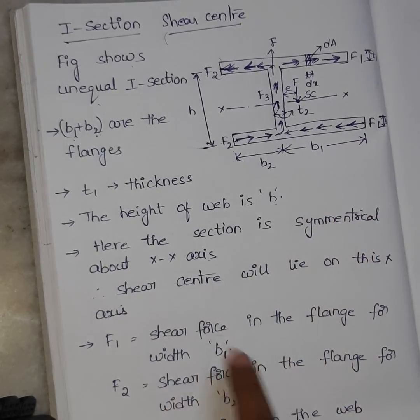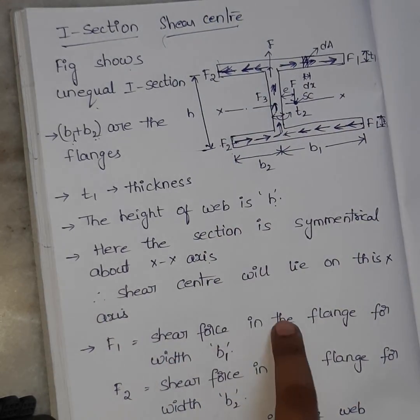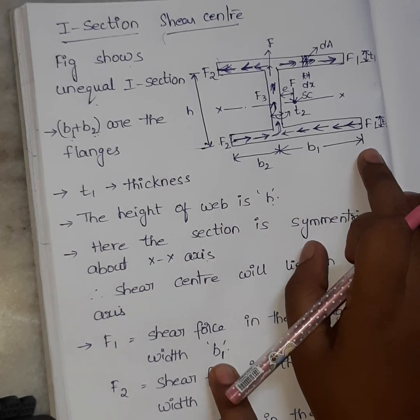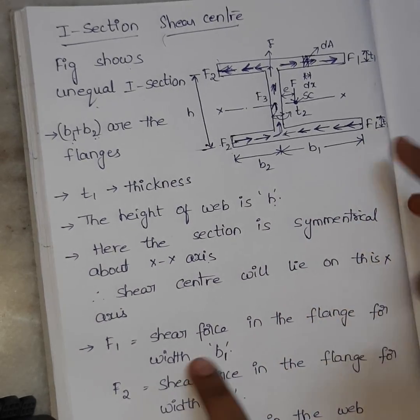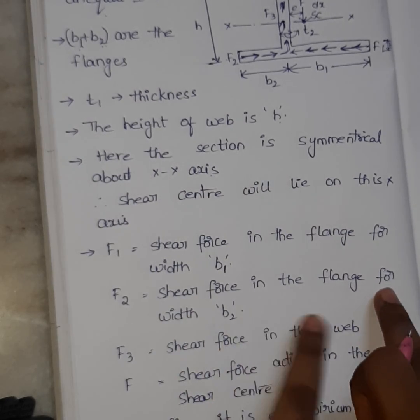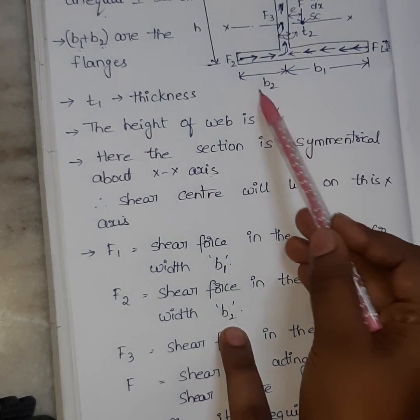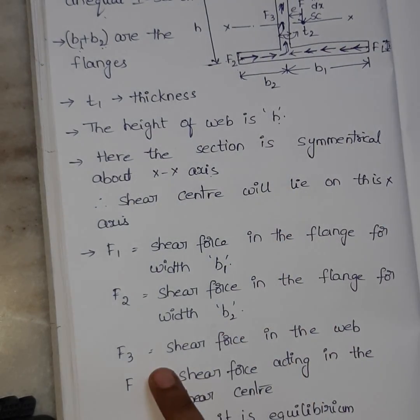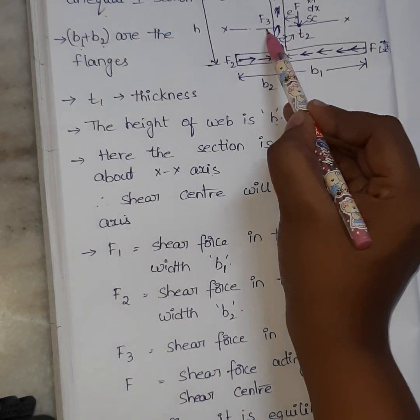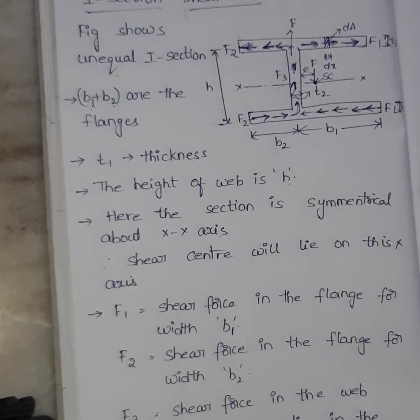The important terms are F1, which is the shear force in the flange for width B1. This is my width B1. So F1 is the shear force in the flange for width B1. Next, shear force in the flange for width B2. This is F2, the shear force for width B2. Next one, F3 is the shear force in the web. Here is F3.